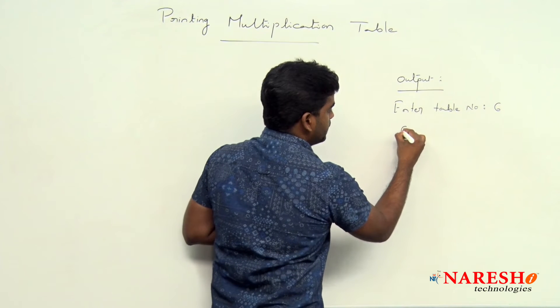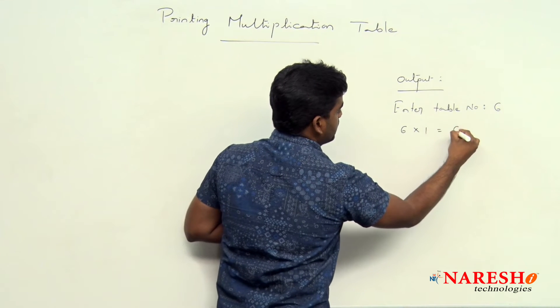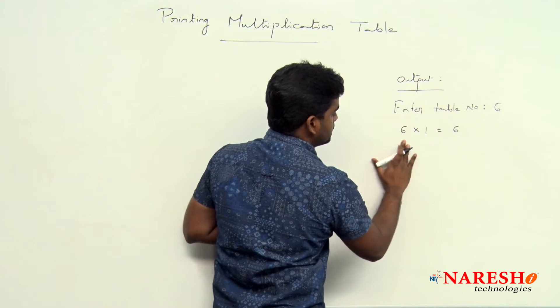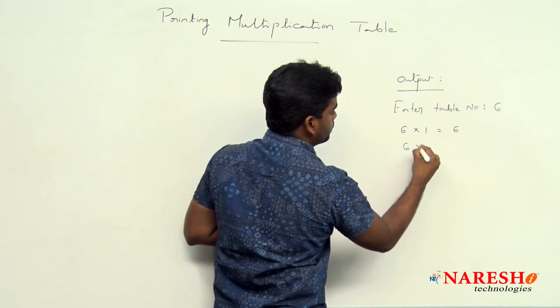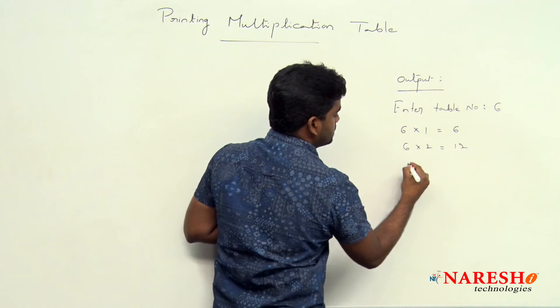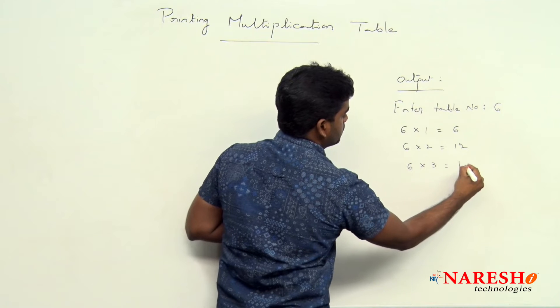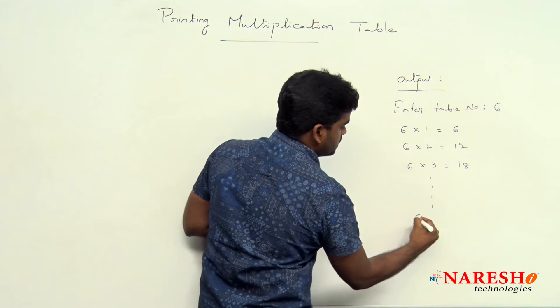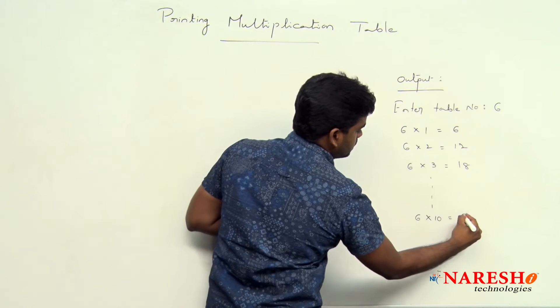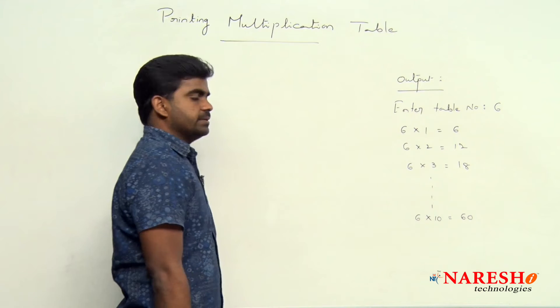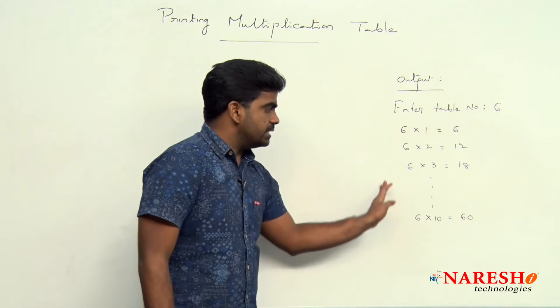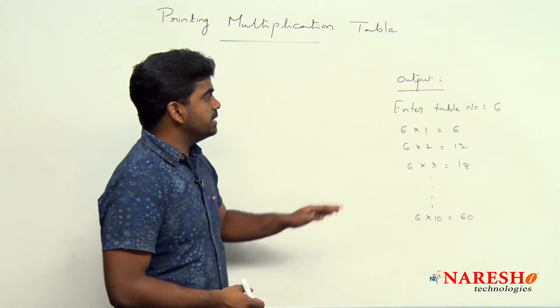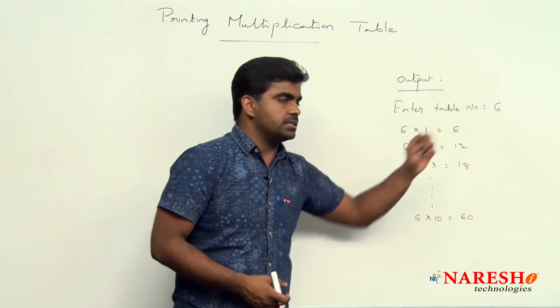6 multiplied with 1, 6 multiplied with 2, 6 multiplied with 3, and like this 6 multiplied with 10. Like this I want to display the multiplication table. Here we are considering that number is 6.